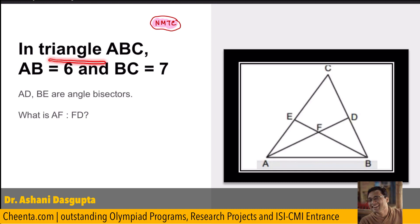It says that we have a triangle ABC. So, this is a triangle. AB is equal to 6. AB is 6. And BC is equal to 7. BC is 7.